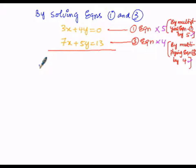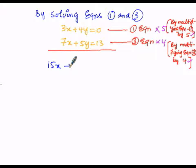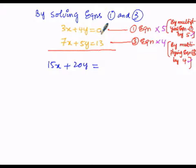Here each and every term of the first equation must be multiplied with 5. 5 into 3 is 15x, plus 5 into 4 is 20y, equals to 5 into 0, which is 0. Let us write this equation as equation number 4.